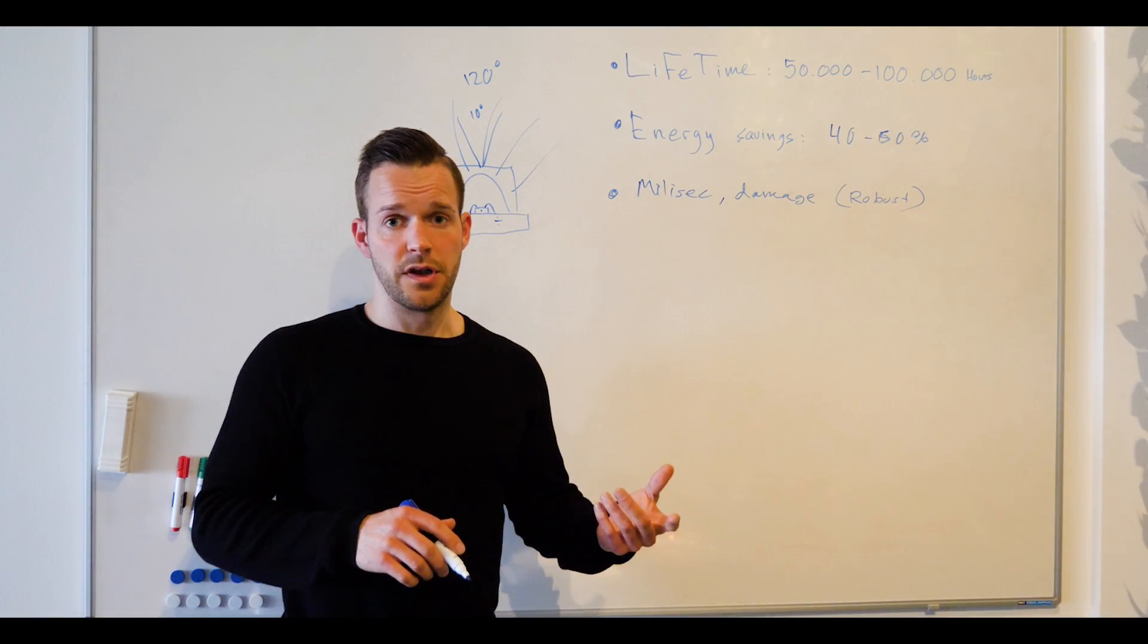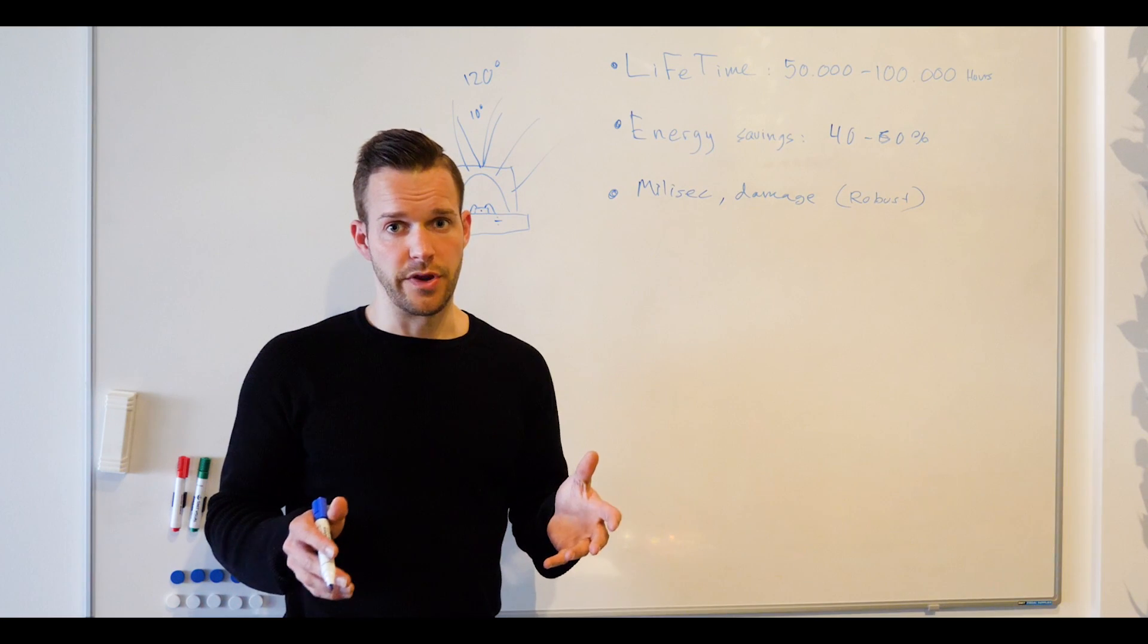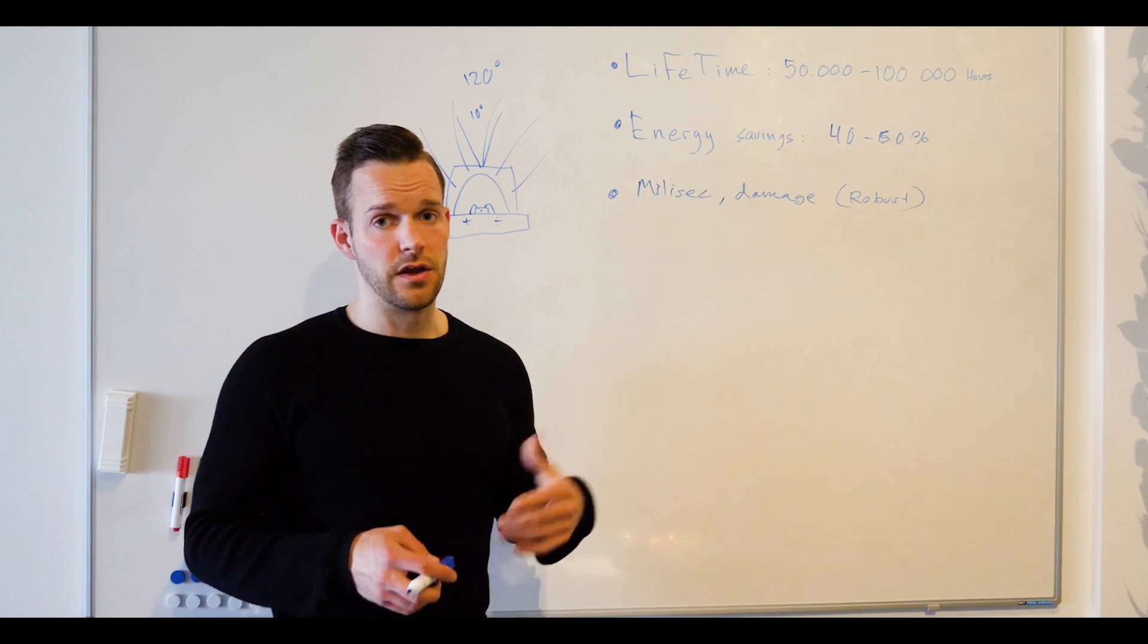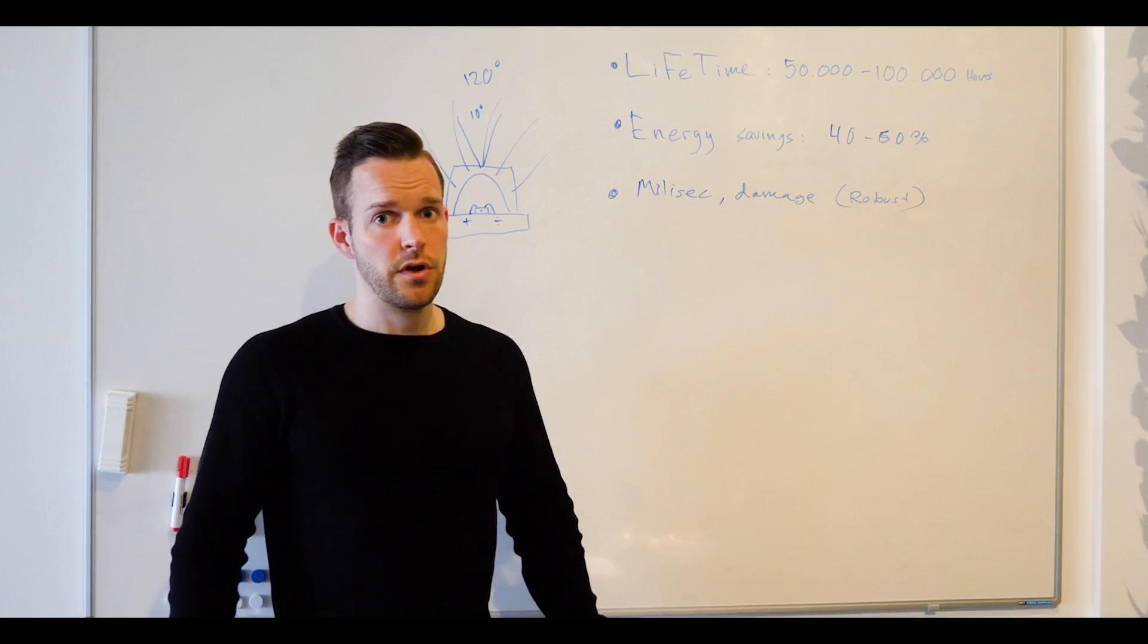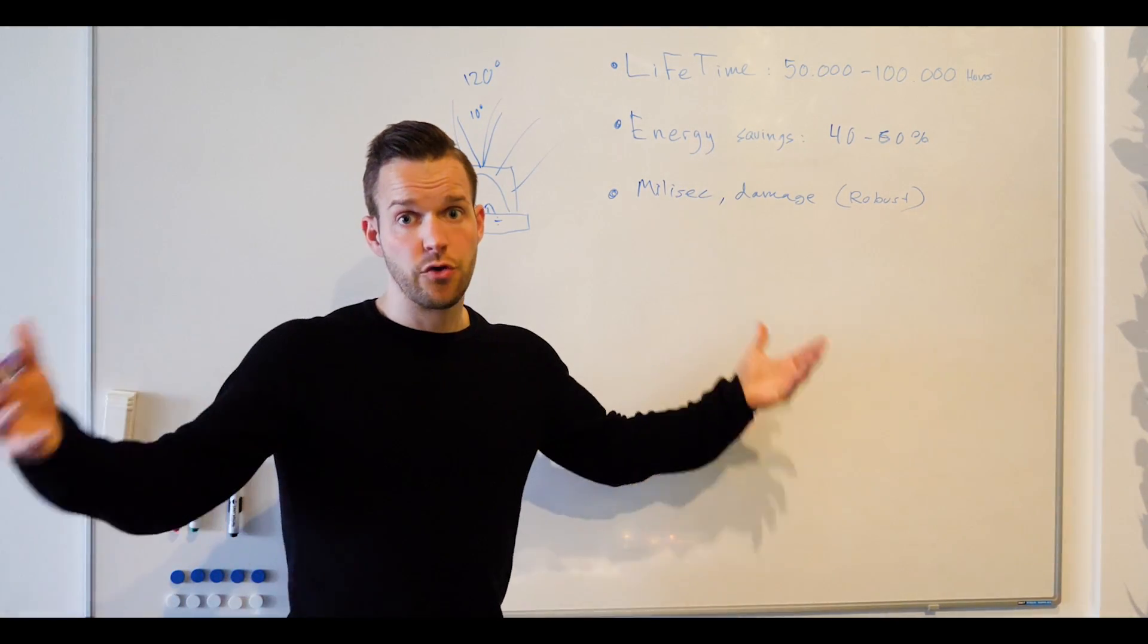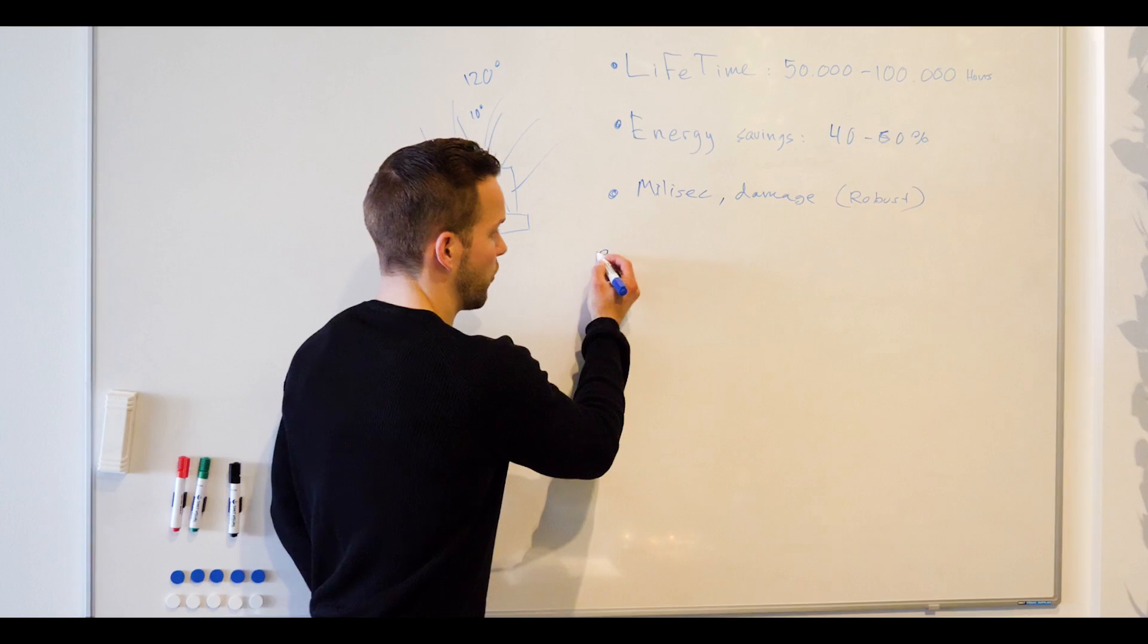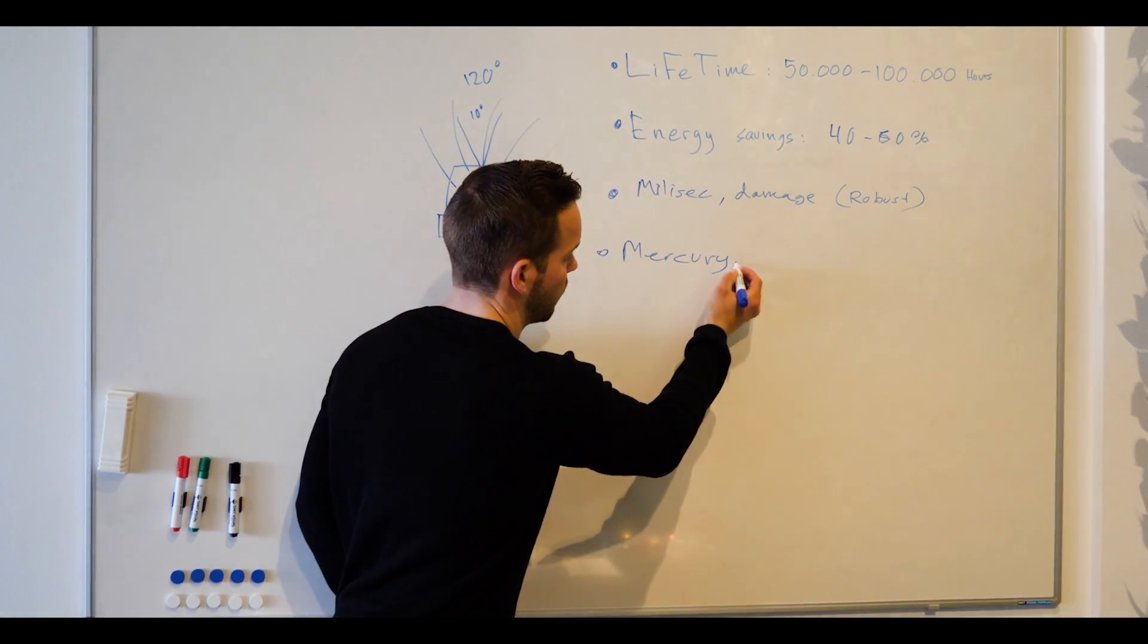Another thing to point out when we're speaking about the advantages is that the LEDs are not including mercury. Just in comparison, the fluorescent tube is including mercury, which is not good if the light source is damaged and the mercury will get out in the room. So you have to evacuate the room if that happens, and that's not something that LEDs are including. So no mercury in the light source.